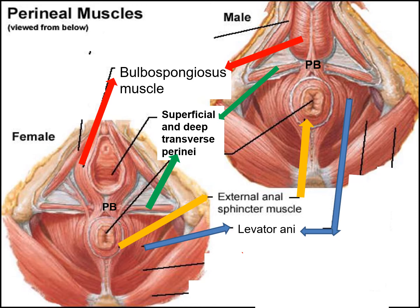The superficial transverse perineal muscles are present in the superficial perineal pouch. Deep to them, in the deep perineal pouch, are a pair of deep transverse perineal muscles placed in the same orientation. All these muscles attach from the ischial tuberosity toward the perineal body. The next pair, the bulbospongiosus muscles, are present around the vagina in females and around the root or bulb of the penis in males. The anterior fibers of the levator ani, known as pubococcygeus, are also attached to the perineal body.